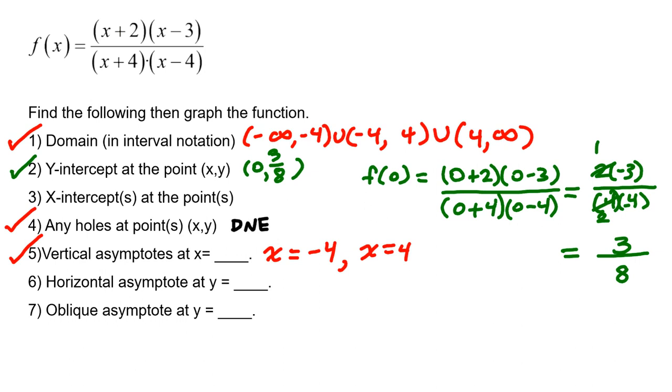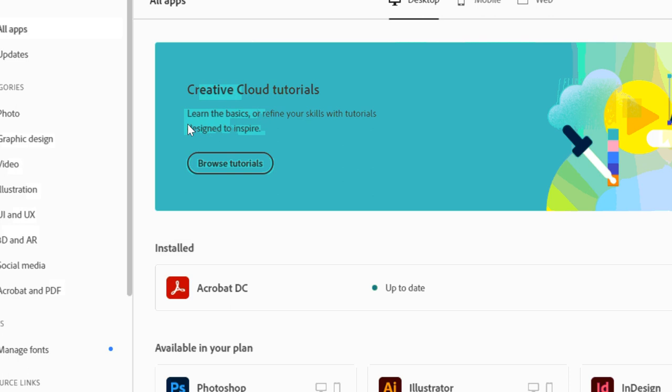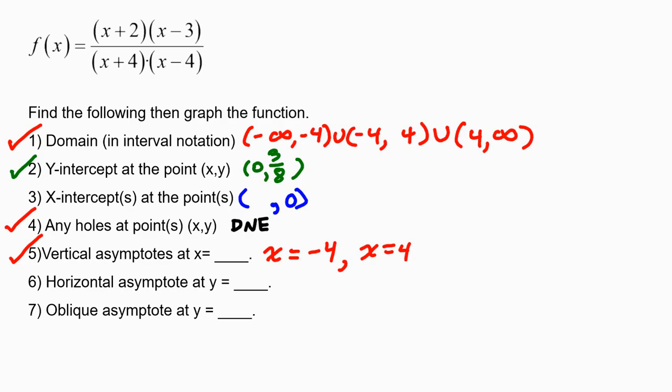And the x-intercepts occur where the function is crossing the x-axis. And on the x-axis, y is always 0. So this time we want to set the whole function equal to 0. Because remember, f of x is another way of saying y. When we plug in x values, we get a result of a coordinated y value. So, how can we make the y equal 0?